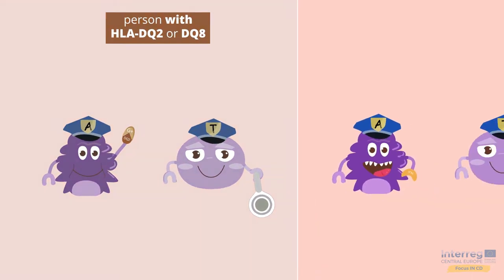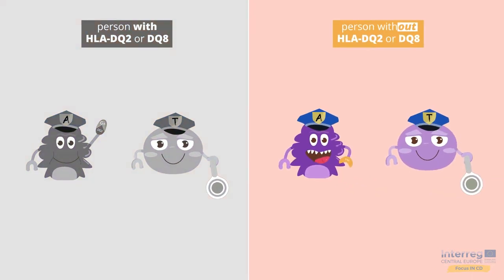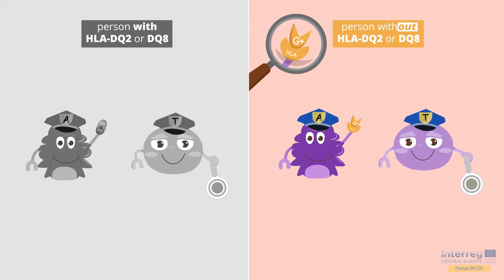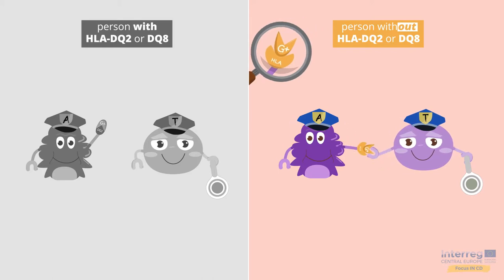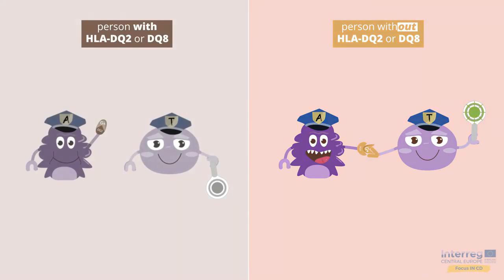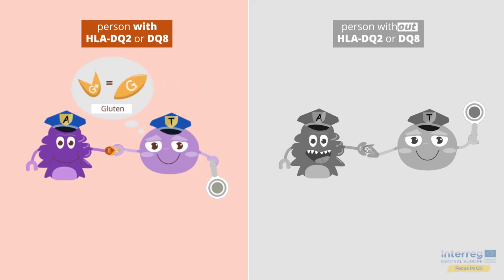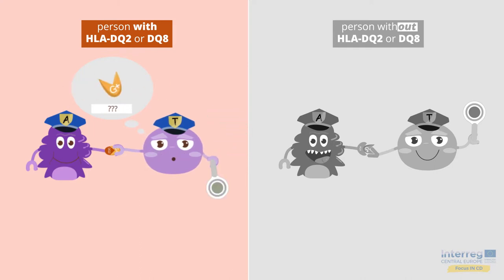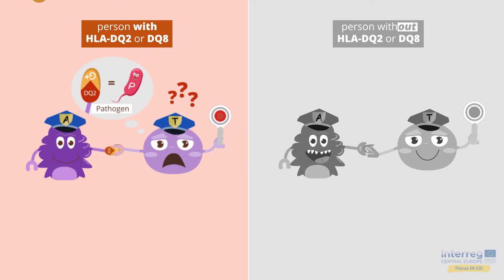In a person without HLA-DQ2 or DQ8 genes, the HLA arms have another shape which binds the modified gluten in a different way. When the antigen-presenting cell presents the modified gluten fragment, the T-helper cell always recognises gluten as harmless. The same happens in the majority of people with the celiac HLA genes — the T-helper cell usually considers gluten as a friend.